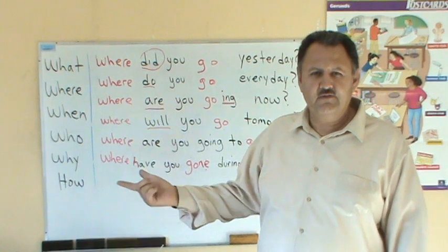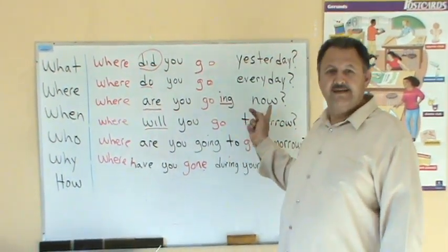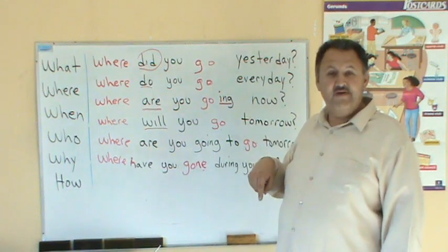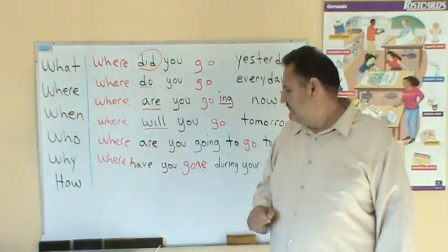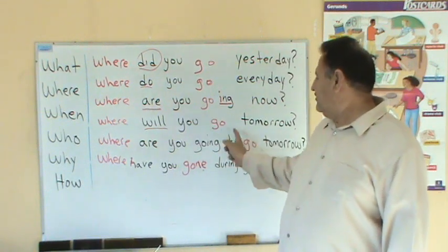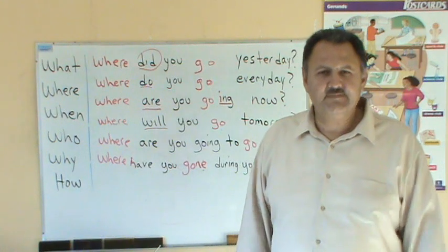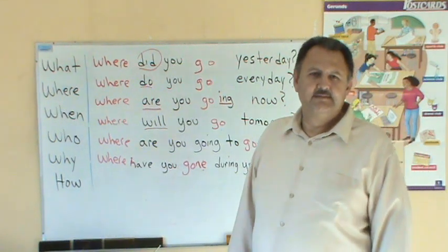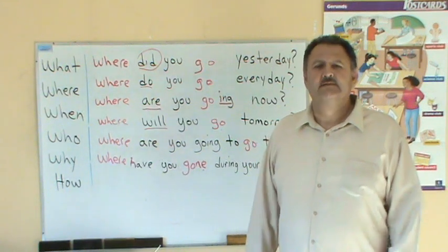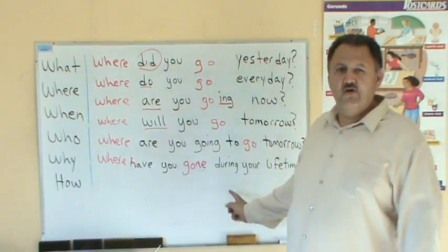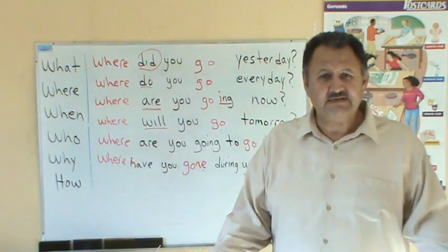Where do you go? — ¿A dónde vas? Where are you going now? — ¿A dónde vas ahora? ¿A dónde estás yendo ahora? Where will you go tomorrow? — ¿A dónde irás mañana? ¿A dónde vas a ir mañana?